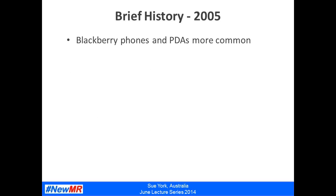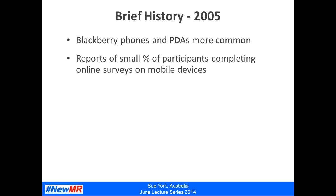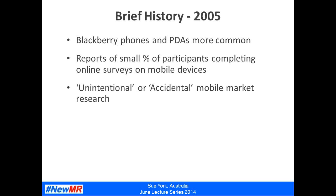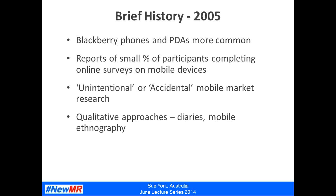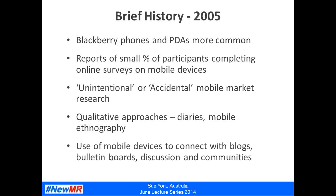Moving to 2005, BlackBerry phones and PDAs were becoming more common. This is when we started seeing reports of small percentages of participants completing online surveys — intended for PCs — on mobile devices. These were called unintentional or accidental mobile market research, because whilst they were mobile market research, the researcher hadn't intended for them to be completed that way, and that potentially posed some issues. We also started to see the birth of qualitative approaches, with mobile phones being used for things like diaries and mobile ethnography. People were also starting to use mobile devices to connect with blogs, bulletin boards, online discussions and communities.